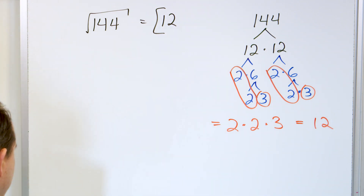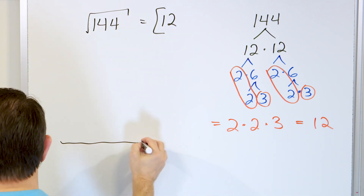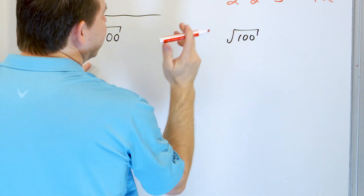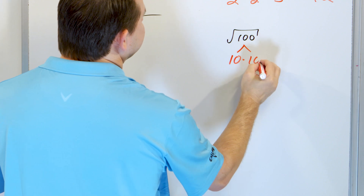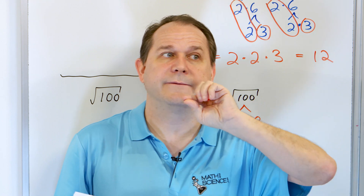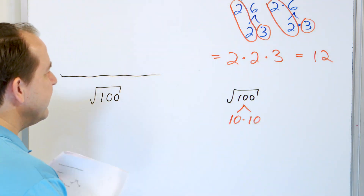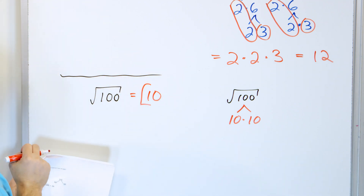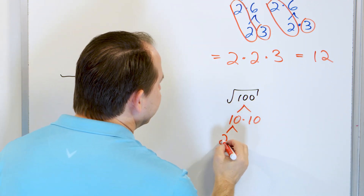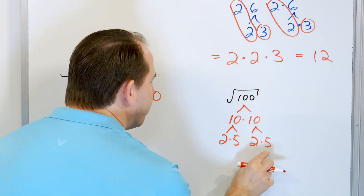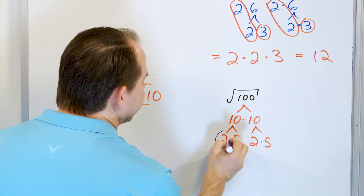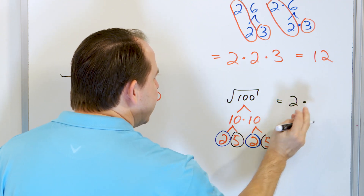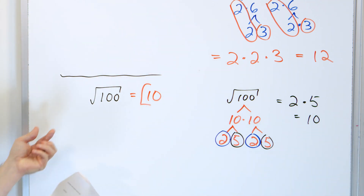I'm emphasizing this because in a few lessons the numbers are going to get larger. Now, what about the square root of 100? I recognize that 10 times 10 is 100 — there's a pair of 10s, so the answer is 10. But if you didn't recognize that, you'd say 2 times 5 and 2 times 5. These are all prime numbers. Here's a pair of 2s and here's a pair of 5s. The pair of 2s comes out as 2, the pair of 5s comes out as 5, and 2 times 5 is 10.